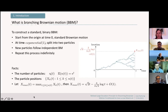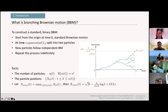It is known from work by Bramson that the order of the maximum, with no conditioning, is given by sqrt(2t) minus (3/(2*sqrt(2))) * log(t) plus an order-1 correction term that can be described more precisely, but this will not be the focus of this talk. The main point is that typically, if we observe branching Brownian motion, the maximal particle will be around sqrt(2t).